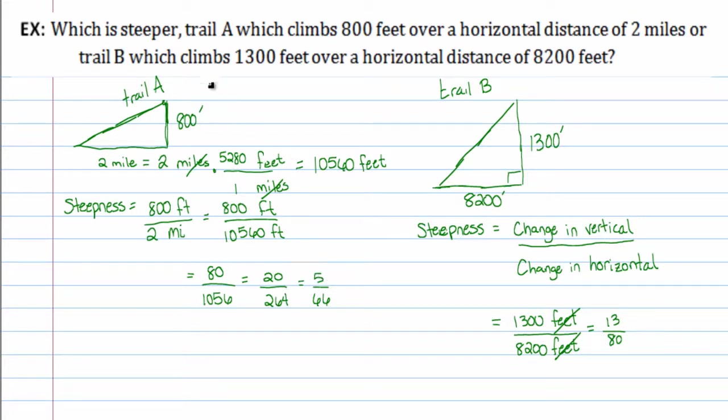Now, here's the deal. The original question was saying, which is steeper, trail A or trail B? Well, the steepness, the one that's going to be steeper is the one that is a larger fraction, essentially. And comparing these two fractions, there's a couple ways to do it. You have 5 over 66 versus 13 over 80.